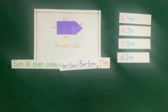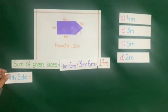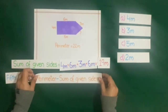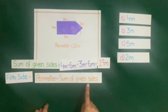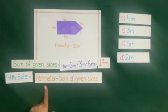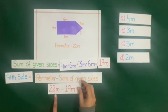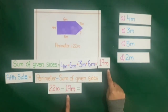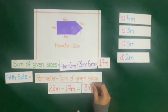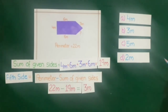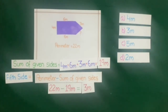To find the 5th side of the given figure, we will subtract the sum of given sides from the perimeter. So 22 meters minus 19 meters is equal to 3 meters. The correct answer is B, that is 3 meters.